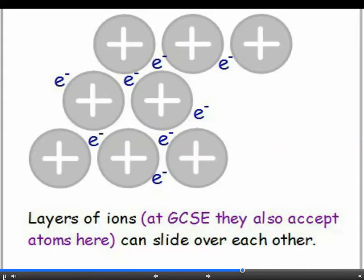As you know, metals can be bent, shaped and pulled into wires without breaking. That's because the layers of atoms are able to slide over each other, yet they're still held together by the attraction of the positive ions to the delocalised electrons. Note the difference with graphite, where the layers just slide away.